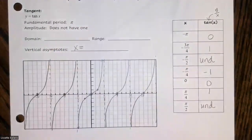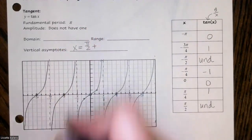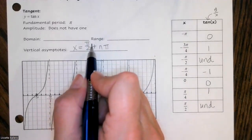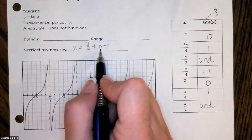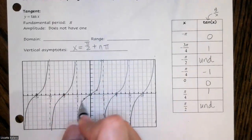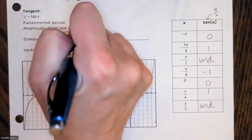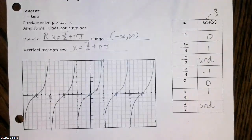Our vertical asymptotes — vertical lines are x equals. Our first one is at π/2. Every π distance we get another vertical asymptote, so the formula is x = π/2 + nπ, where n stands for all whole numbers. Our domain is all real numbers except those asymptotes. Our range is from negative infinity to positive infinity. That's our parent function for tangent.